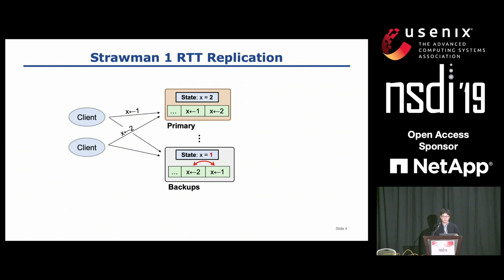It may seem that clients can replicate directly to backups in parallel with sending the request to a primary, which could result in one RTT replication. The problem is client requests may arrive at servers in a different order. For example, at the primary, assigning 1 to x arrives before assigning 2. But at the backup, assigning 2 arrives before assigning 1. Because of this out-of-order arrival, the backup has the value of 1 instead of 2. This is not consistent replication, because if the primary crashes, the value of x will change from 2 to 1. So this strawman 1 RTT replication doesn't work.